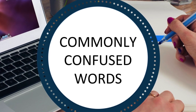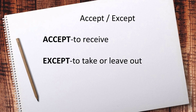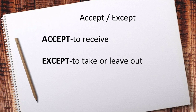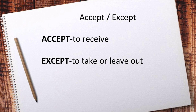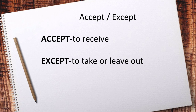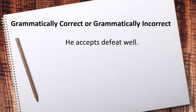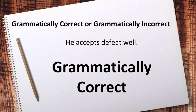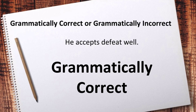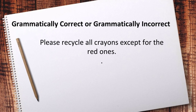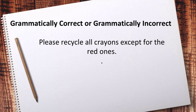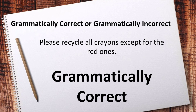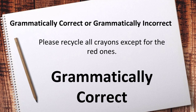Let's talk about commonly confused words. Accept and except — they sound similar but are different. Accept with an A means to receive, and except with an E means to exclude or leave out. He accepts defeat well — grammatically correct. Please recycle all crayons except for the red ones — grammatically correct.